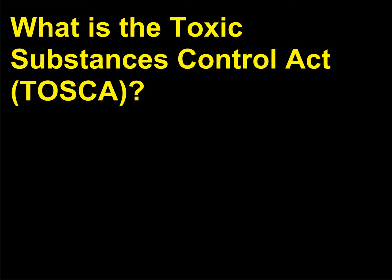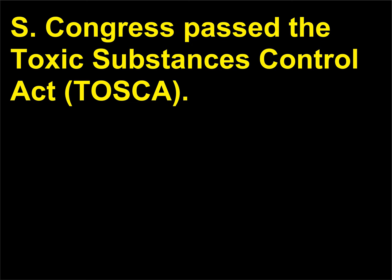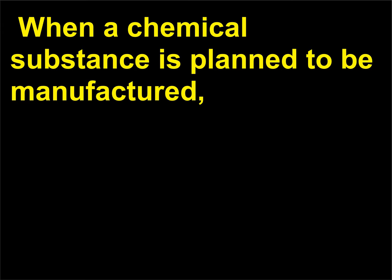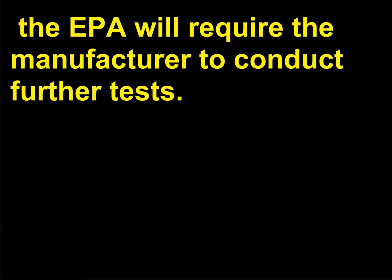What is the Toxic Substances Control Act (TOSCA)? In 1976, the U.S. Congress passed the Toxic Substances Control Act (TOSCA). This act requires the pre-market testing of toxic substances. When a chemical substance is planned to be manufactured, the producer must notify the Environmental Protection Agency (EPA), and if the data presented is determined to be inadequate to approve its use, the EPA will require the manufacturer to conduct further tests.